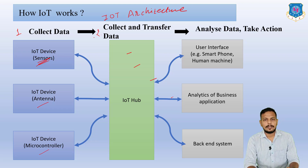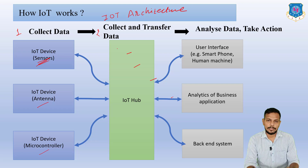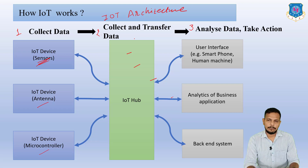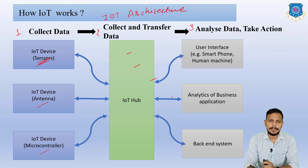The second layer is the network layer, which collects information from the perception layer and transfers it forward. It is denoted as the IoT hub — it may be your router or your IoT gateway — and it forwards data to the third layer. The third layer is the application layer, where data is analyzed and action is taken according to the information. It may be a user interface such as a smartphone, analytics, business applications, or a backend system.